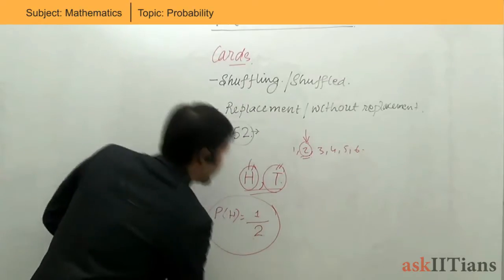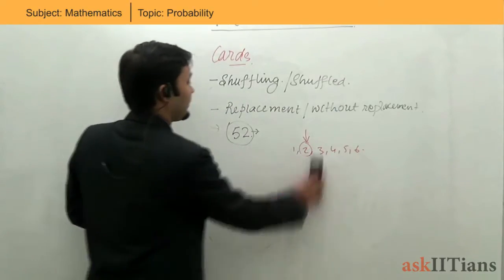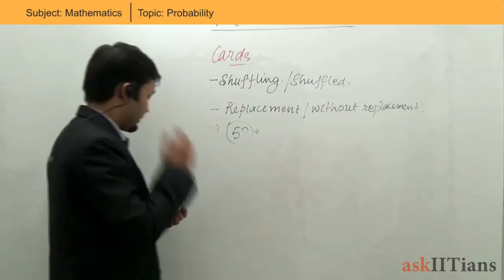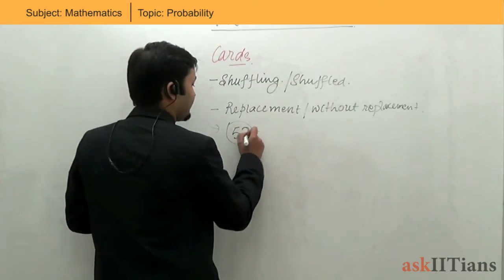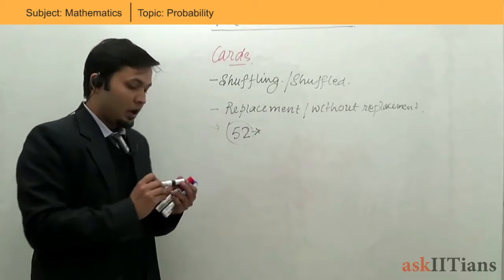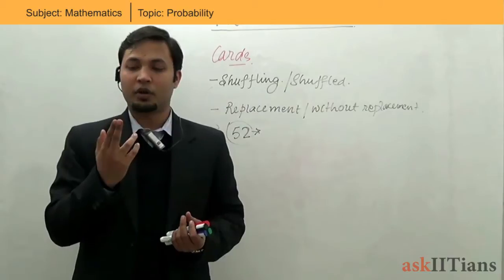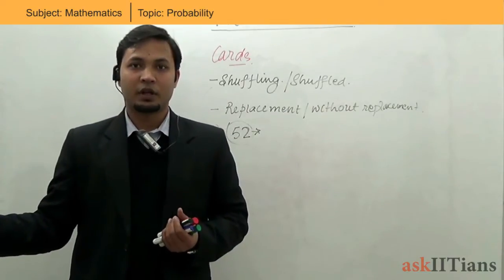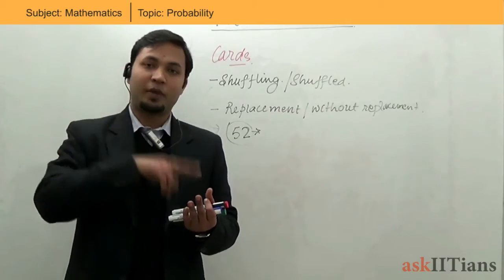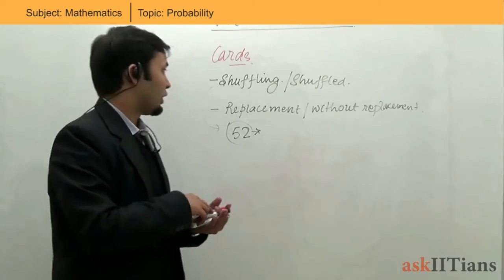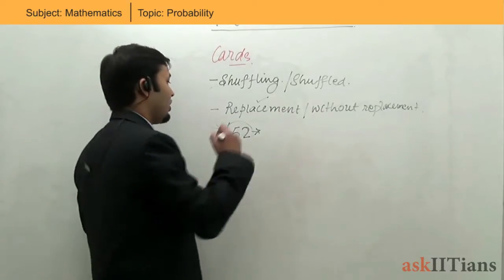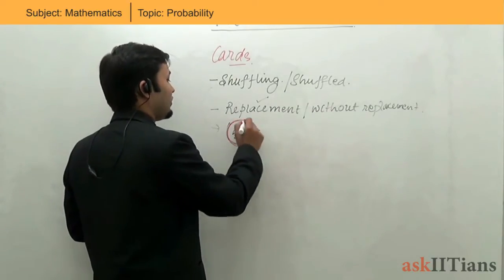Now let's move back to replacement and without replacement. Say I have a pack of cards with 52 cards, and I'm doing an event where I take out a card, see it, and put it away — that is without replacement. When I see the card and put it back in the deck, that is with replacement. With replacement, the number of cards will always remain the same, and the probability will always be calculated using this number.